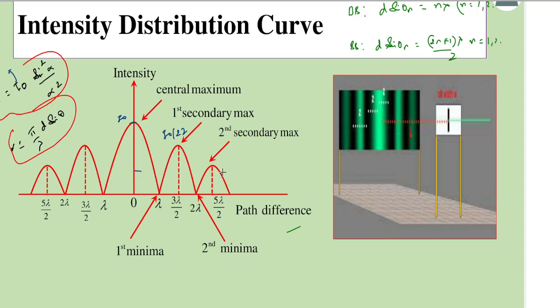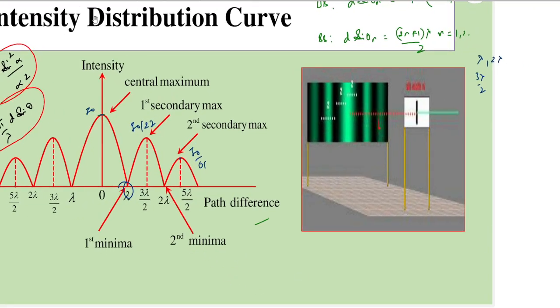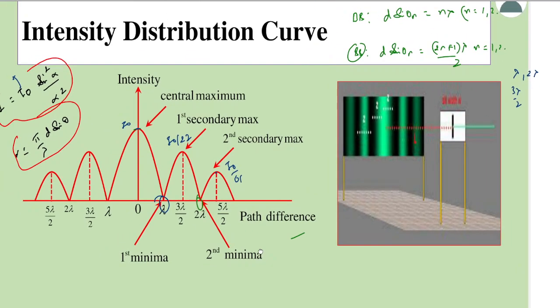The bright and dark bands in terms of path difference: at n = 1, the first dark band is obtained at λ. Then the next would be 3λ/2 for a bright band, then 2λ for a dark band. This is how a graph of intensity versus path difference would look for diffraction.